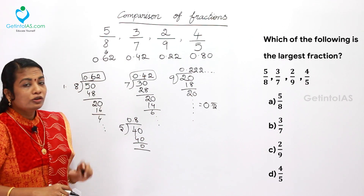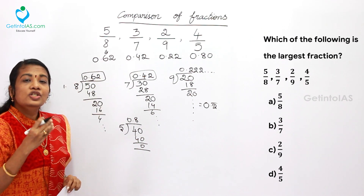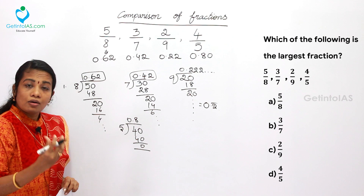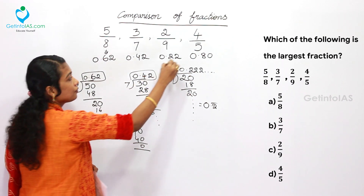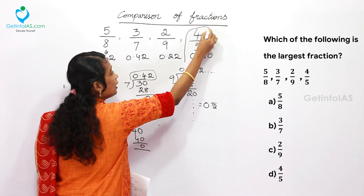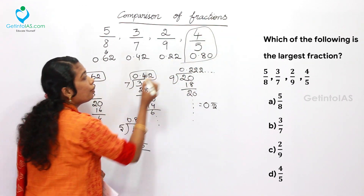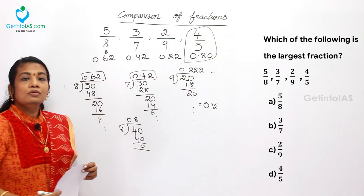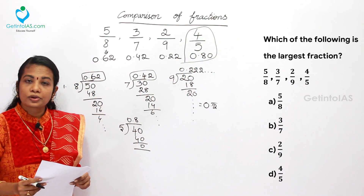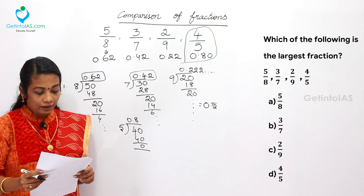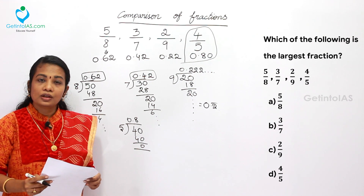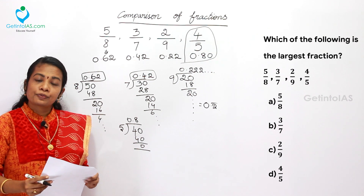Among 0.22, 0.42, 0.62, and 0.80, the largest one is definitely 4/5, which is 0.80. So the answer for this question is 4/5, given in option D.